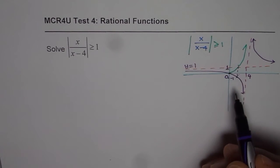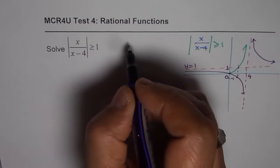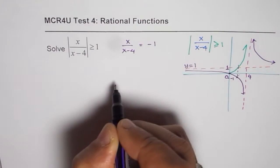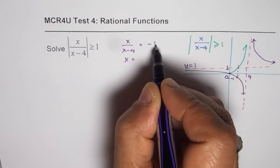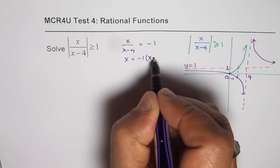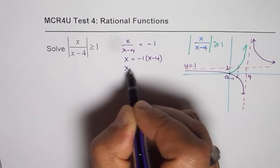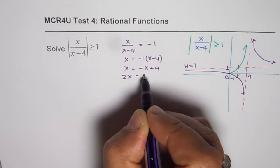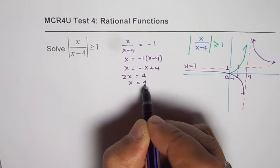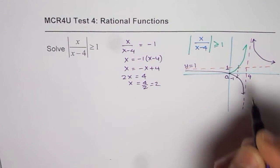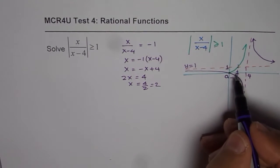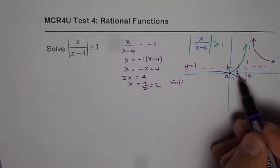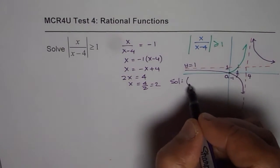Let me use a shortcut method. We solve x over x minus 4 equals minus 1. Cross-multiplying gives x equals minus 1 times x minus 4, so x equals minus x plus 4. Bringing terms together: 2x equals 4, so x equals 2. This means the key point is x equals 2, and our solution interval is from 2 to 4.